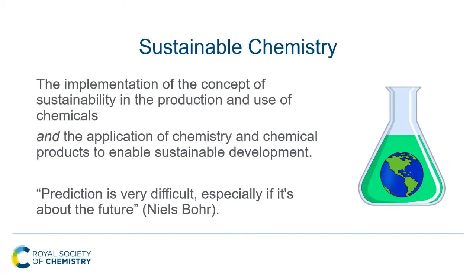Sustainable chemistry is then quite easy to define — it's the implementation of the concept of sustainability in the production and use of chemicals. How can we make the way we make chemicals, use them, and recycle them more sustainable? But importantly, there's a really big question: how can chemistry be applied to enable sustainable development to occur? I'll look at both of those today.